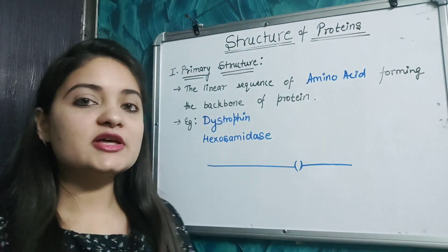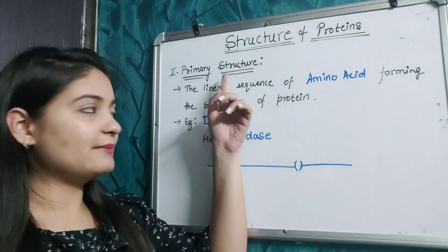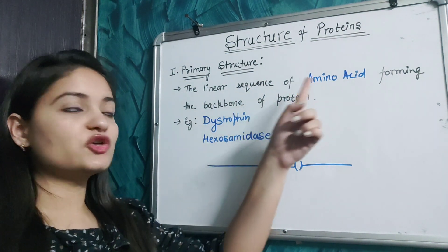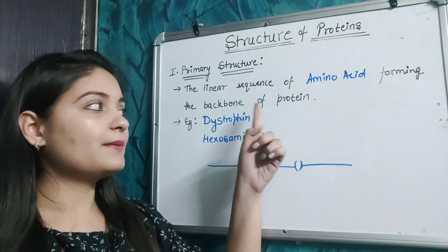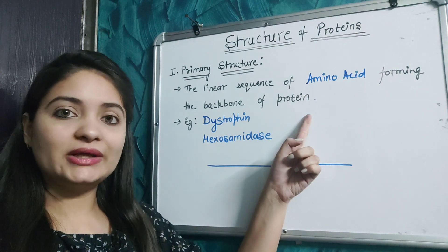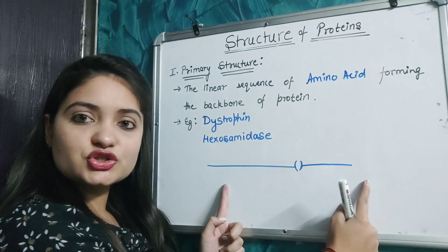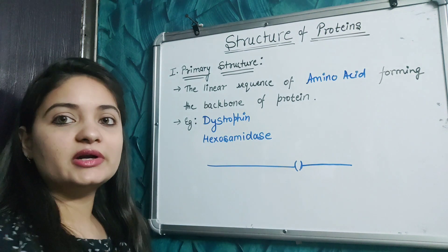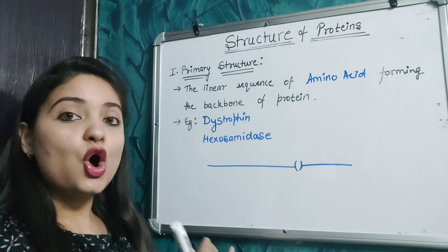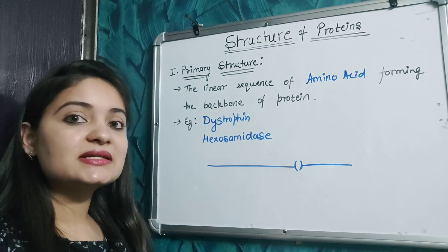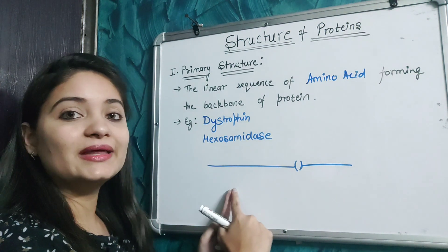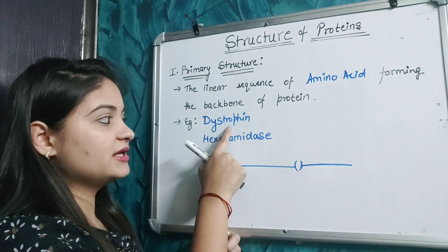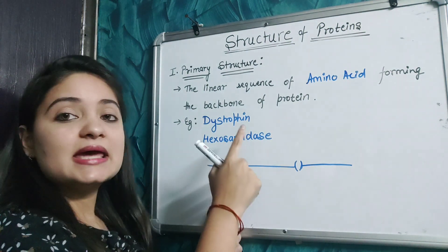The first structure is the primary structure. In this, the linear sequence of amino acids forms the backbone of the protein. The linear structure of protein is formed by 20 different amino acids aligned or sequenced to form the linear structure of protein.